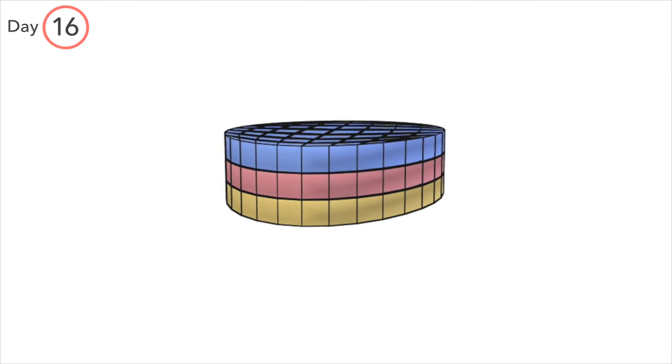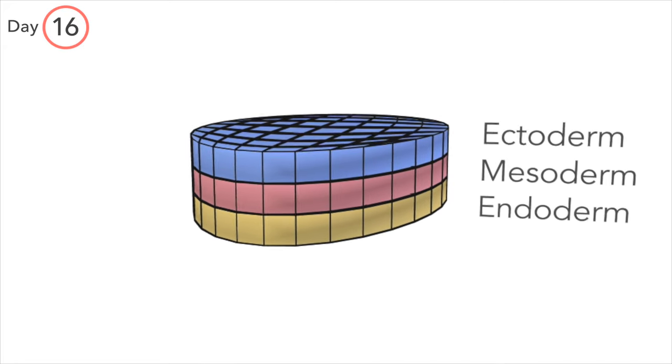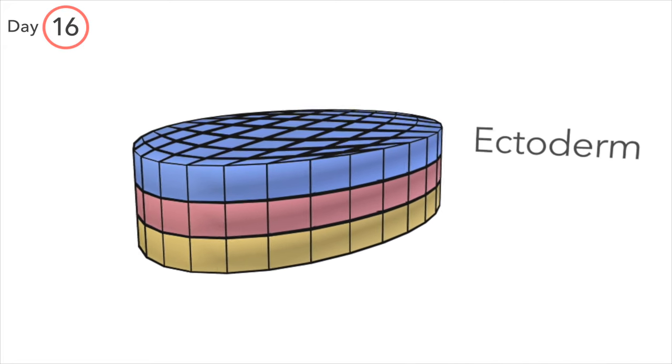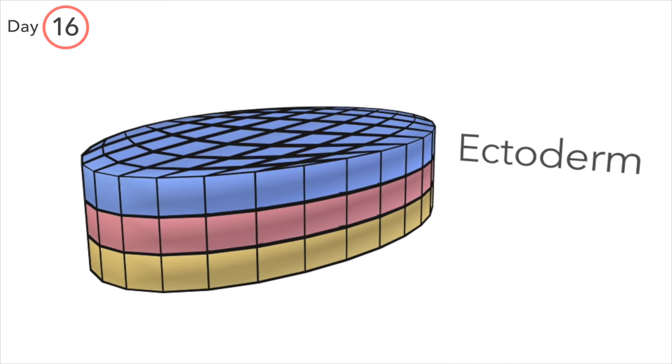By day 16, the embryo consists of three layers: endoderm, mesoderm, and ectoderm. Ectoderm develops into the nervous system, and the first phase of this process is known as neurulation.